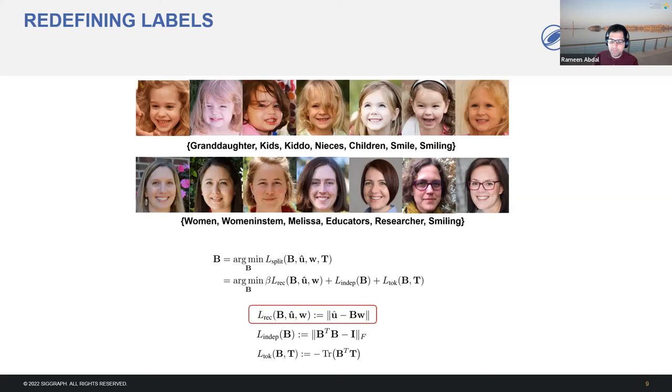In the first term, u hat is the original direction. B is a matrix of disentangled vectors, which we want to optimize. Here, w hat is the confidence scores predicted by the text encoder before the direction is disentangled. In the second term, we make sure that the disentangled directions are orthogonal. In the third term, t is the matrix of text encodings of the labels, and we aim to make our predicted vectors in B parallel to these vectors. So the whole objective would try to produce disentangled orthogonal directions, given an entangled direction in the CLIP space.